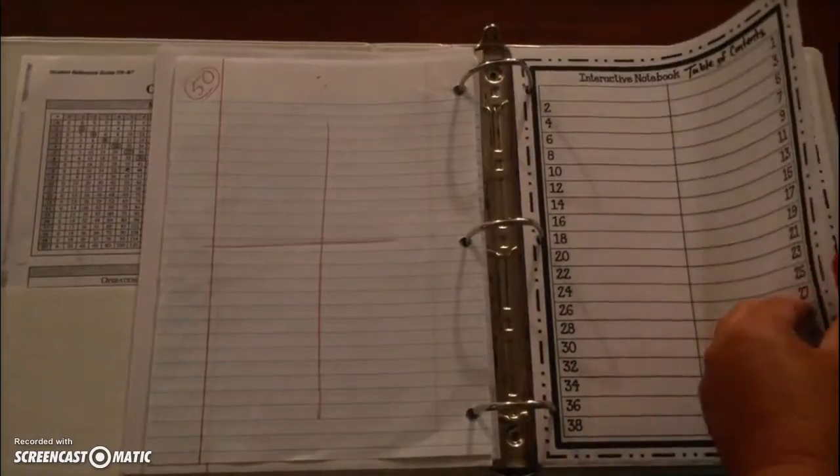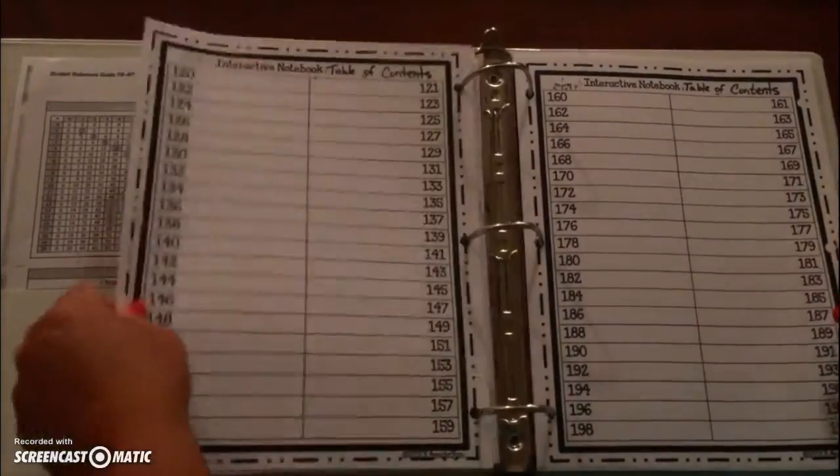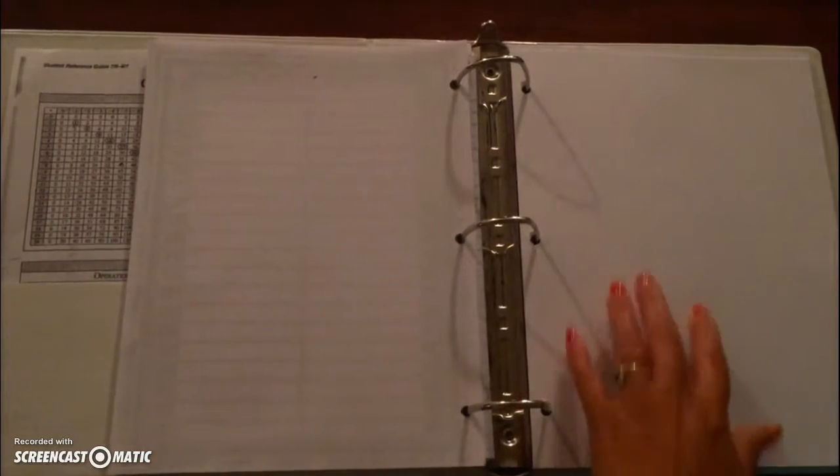Then you're going to work on the table of contents for your interactive notebook. There are four pages of this, that's the next thing in your notebook.